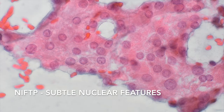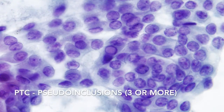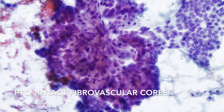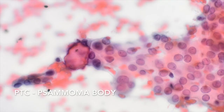Some features that allow a definitive interpretation of papillary carcinoma are multiple — typically more than three — pseudo-inclusions, of which we can see one example here; true papillae with intact fibrovascular cores; and psammoma bodies — all these in the setting of other nuclear features of papillary carcinoma.